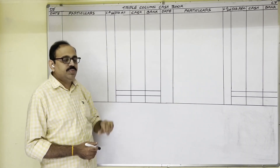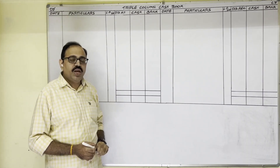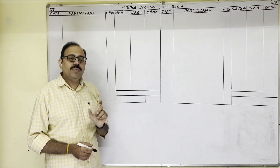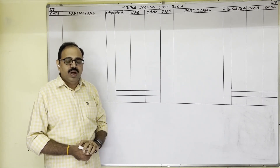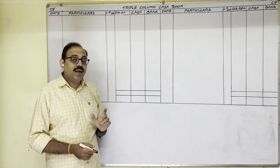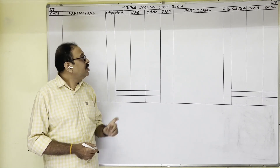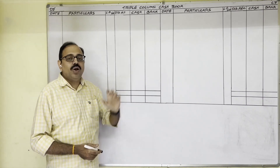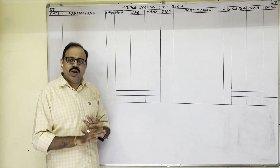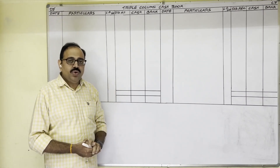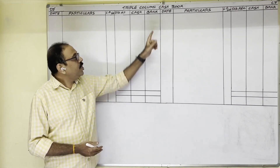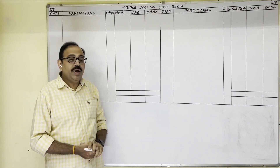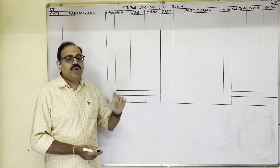This is a triple column cash book. We can also call it a three column cash book, or a cash book with discount, cash, and bank columns. All are the same. The cash book format is an account format.